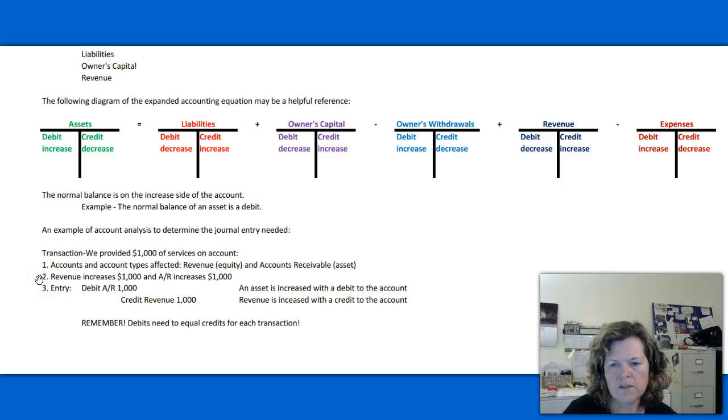Next, we need to determine how these accounts are affected. In this case, revenue increases $1,000. We're receiving income for these services we provided. And accounts receivable also increases $1,000. We've increased the amount that other people owe us. So with that, we can then prepare a journal entry.